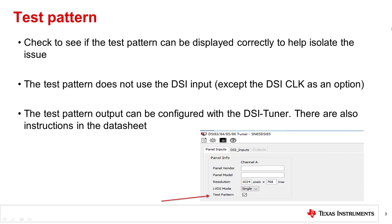Another way to help resolve the issue is to use the test pattern. If the test pattern can be displayed correctly, it helps to isolate the issue since the test pattern doesn't use any of the DSI data lanes. This means that if the test pattern works, then there's an issue on the DSI side. Some examples include not following the initialization sequence and signal integrity.